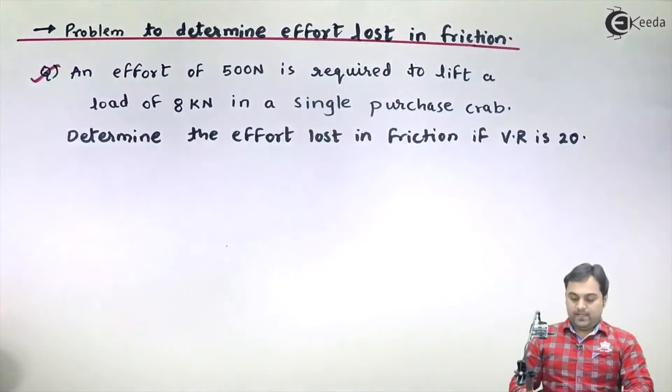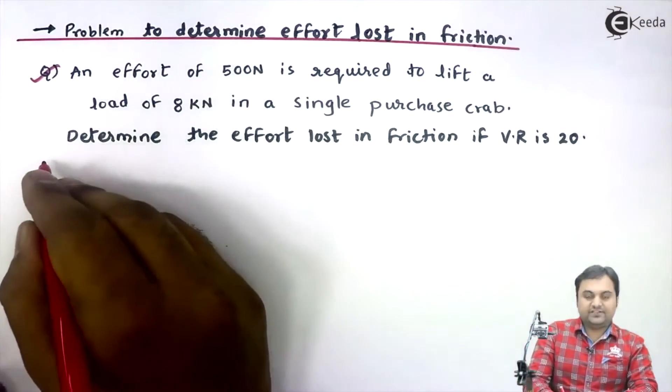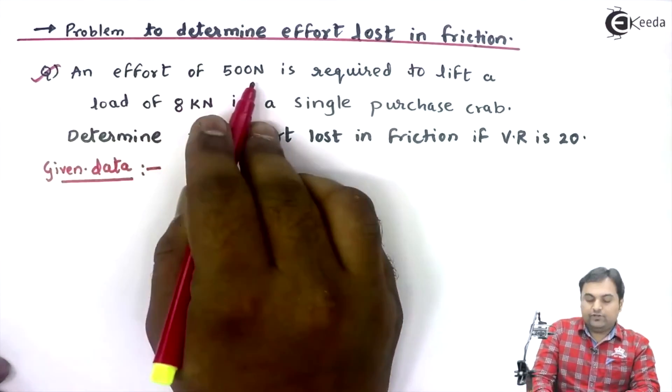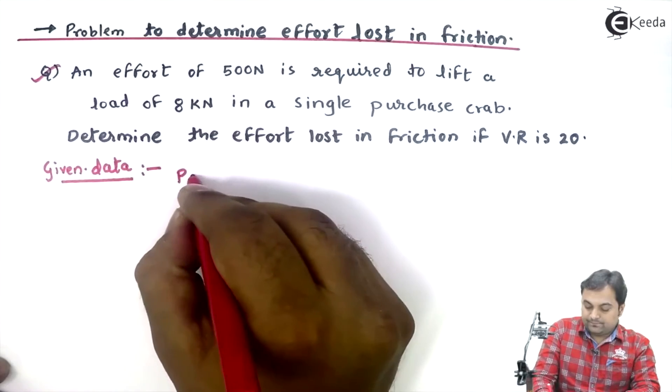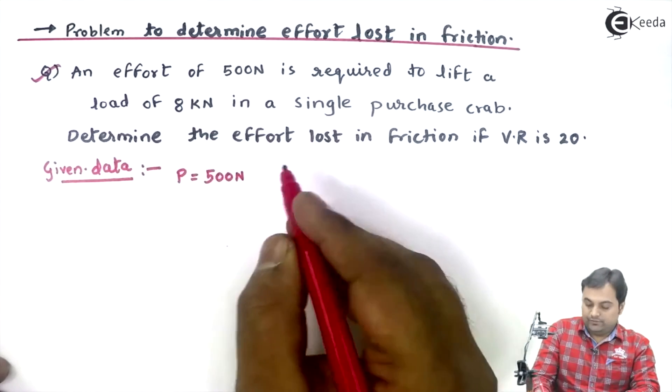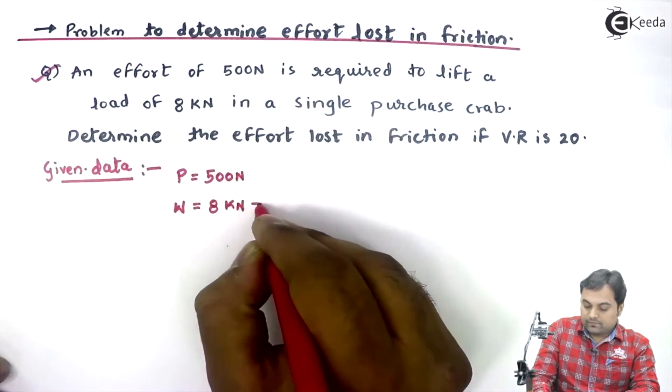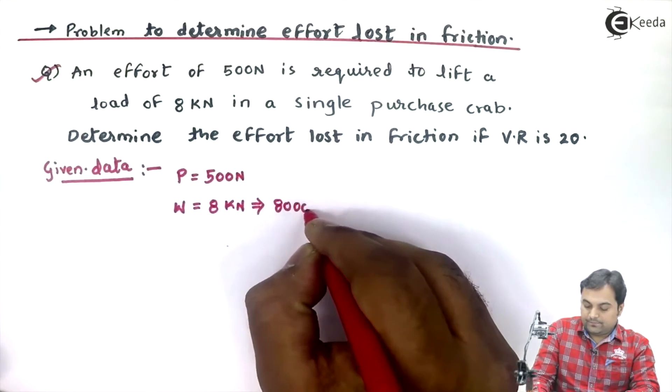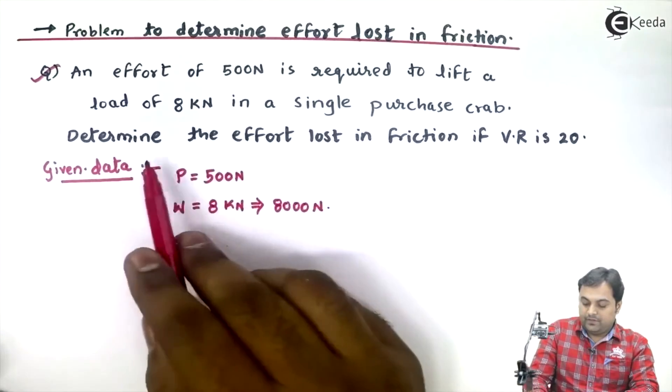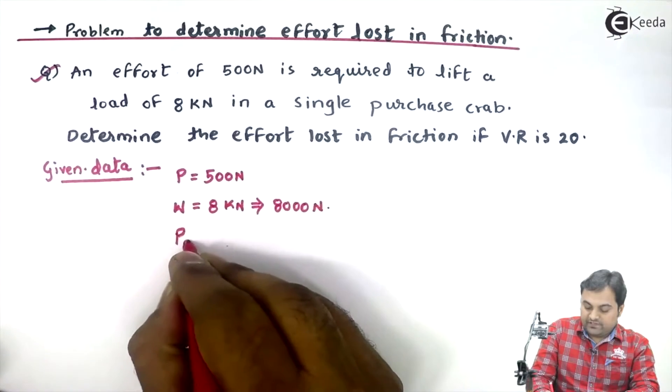Whatever is given here, I will write in the form of data. So let us start this problem. An effort of 500 Newton is required to lift a load of 8 kilonewton, that is 8,000 Newton, in a single purchase crab. Determine the effort lost in friction. We have to find out P suffix F, that is effort lost in friction.